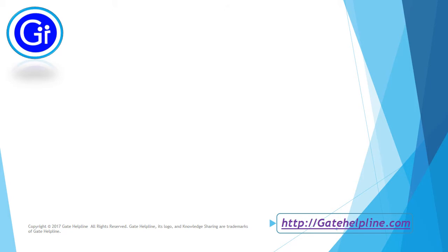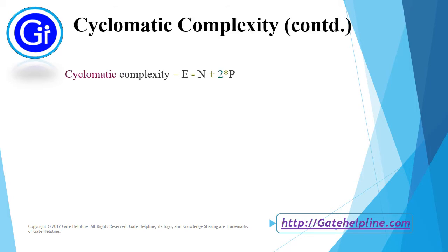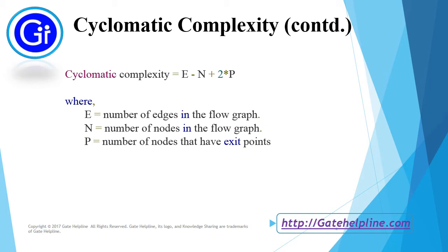Formula for calculating cyclomatic complexity is E minus N plus 2P, where E denotes number of edges in the flow graph, N denotes number of nodes in the flow graph, and P denotes number of nodes that have exit points.